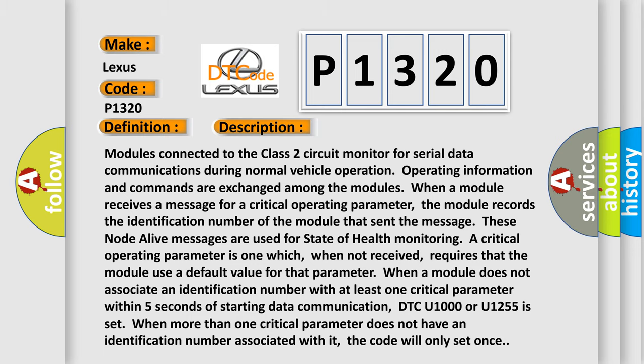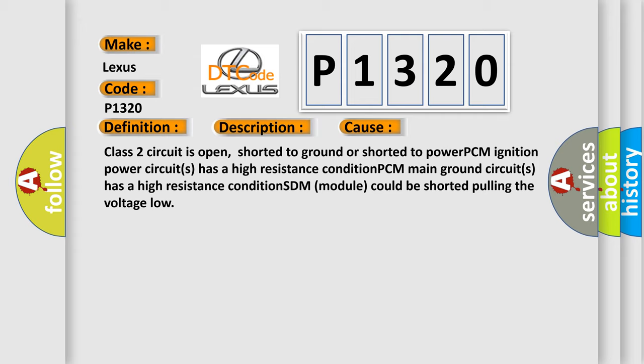This diagnostic error occurs most often in these cases: Class 2 circuit is open, shorted to ground or shorted to power. PCM ignition power circuits has a high resistance condition. PCM main ground circuits has a high resistance condition. SDM module could be shorted pulling the voltage low.